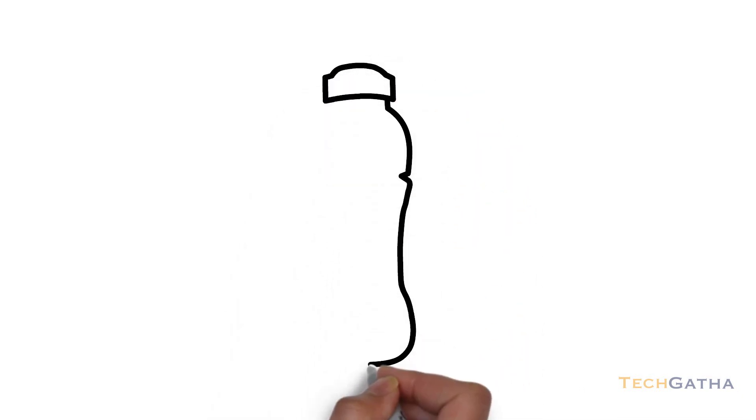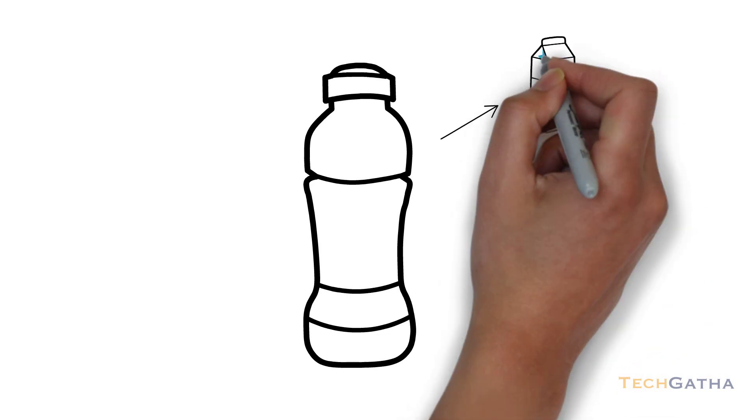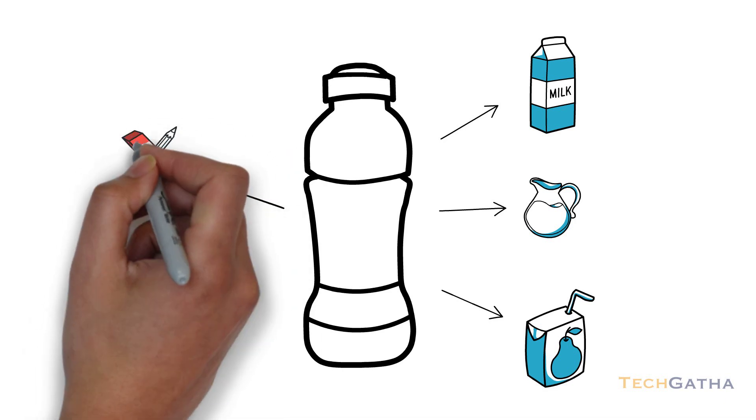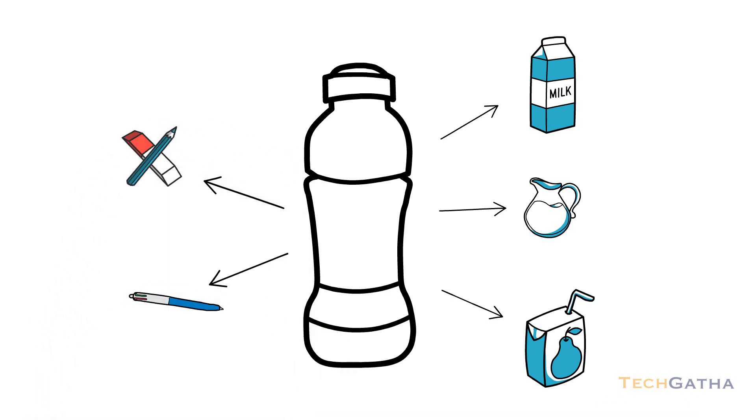To understand the difference, let's take an example of a bottle. A bottle can be used to store anything: milk, water, juice, erasers, pencil, pen, etc.